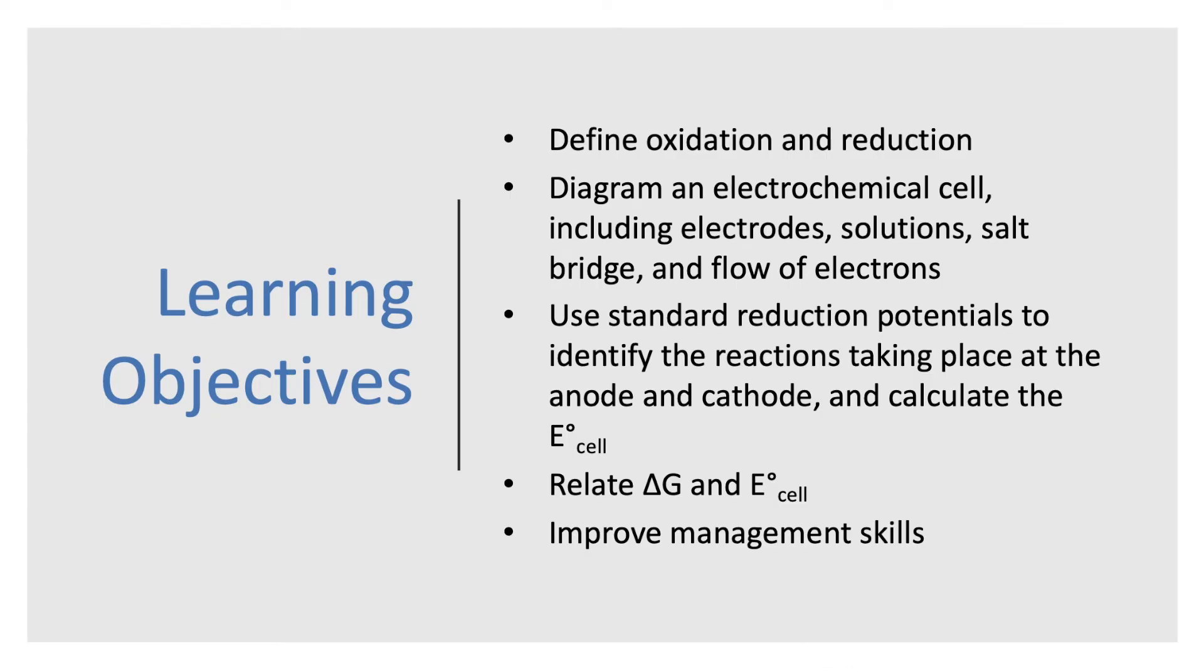So first I want to talk about our learning objectives. We're going to be doing redox chemistry, so we want to make sure you know how to define oxidation and reduction and diagram an electrochemical cell, including the electrode solution, salt bridge and flow of electrons. We also want to make sure that you can identify which electrode is going to be the anode and which will be the cathode and use that to calculate the cell potential and relate the cell potential to delta G, which is the free energy of the reaction.